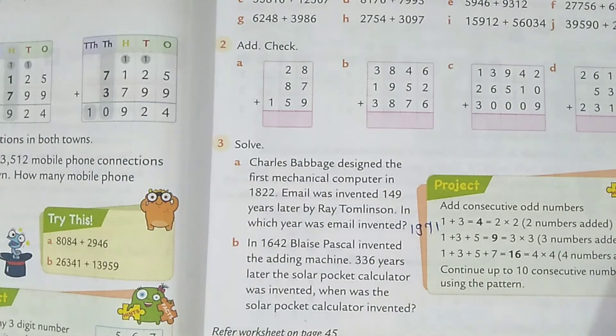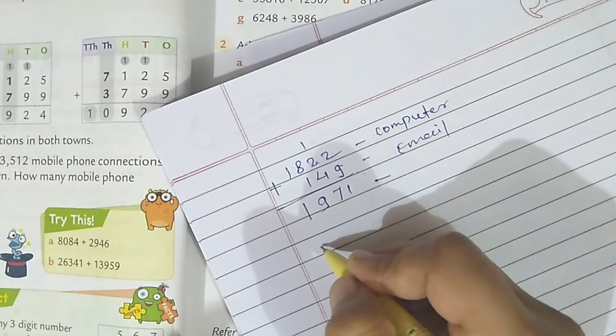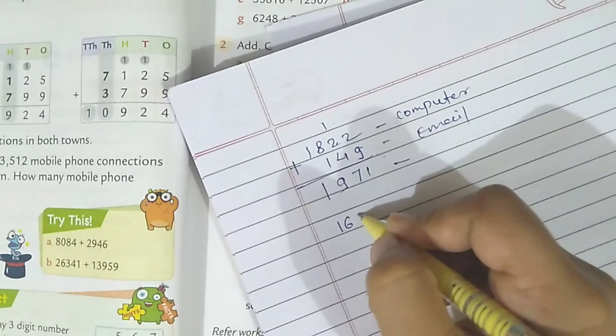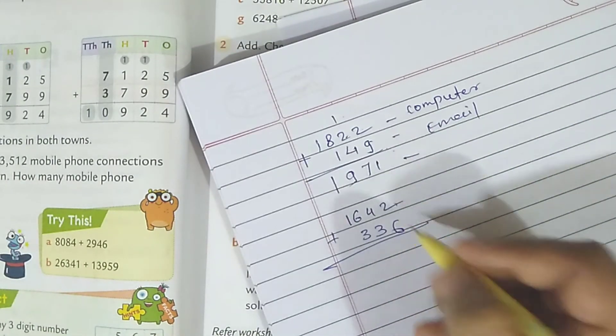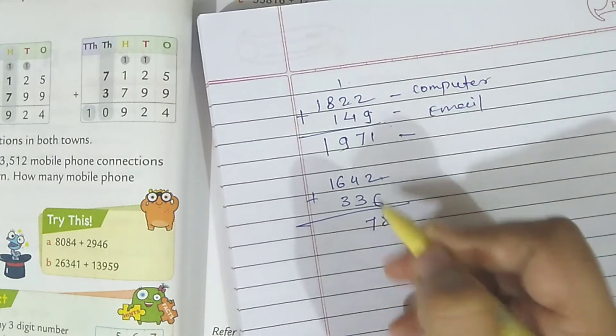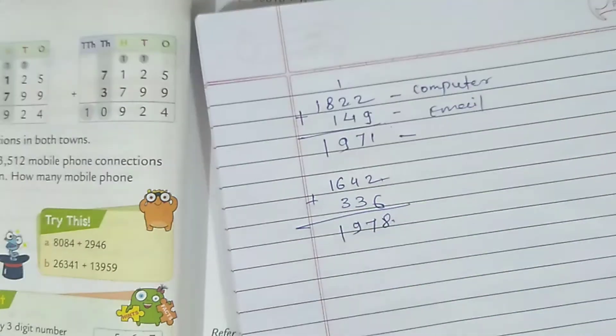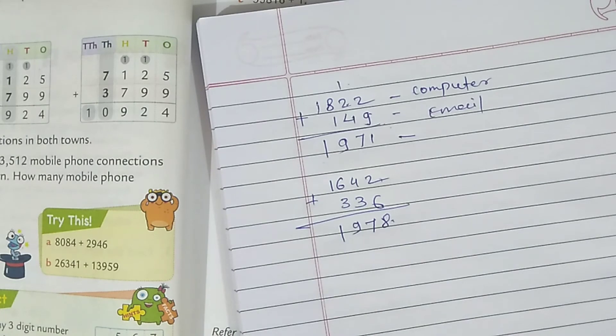1642 में आपको 336 add करना है। In 1642, 336 you have to add. 6 plus 2? 8. 4 plus 3, 7. 6 plus 3, 9. 1. So this is the year, 1978.